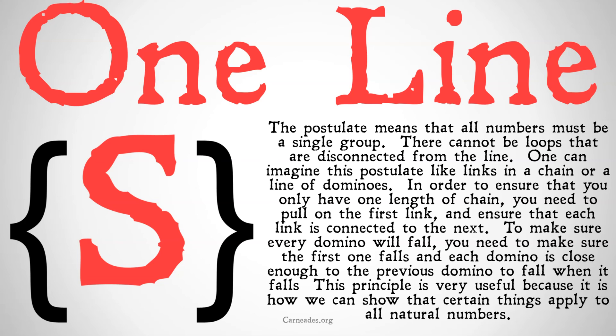But if there was a separate set of chain, pulling on that first link wouldn't lead to that separate set of chain coming as well. Our current postulates allow for there to be basically two lengths of chain, but in order to have a good number line where all the numbers come one after another, we need just that one single length that starts with zero. To make sure every domino will fall, you need to make sure that the first one falls, and that each domino is close enough to the previous domino to fall when it falls.